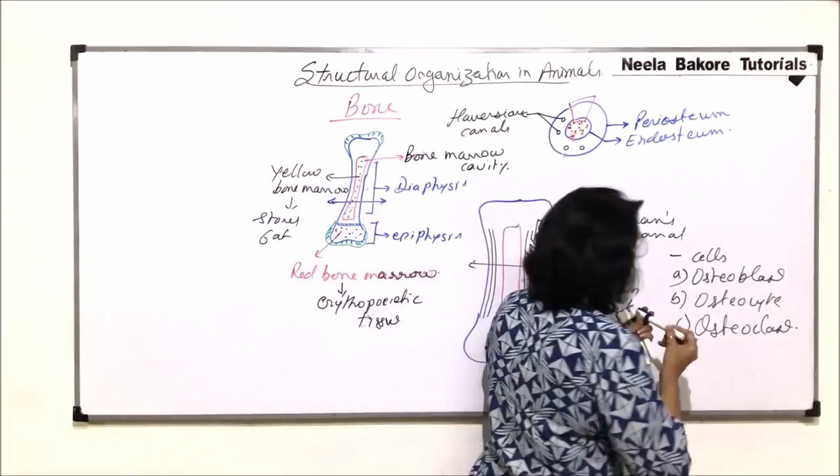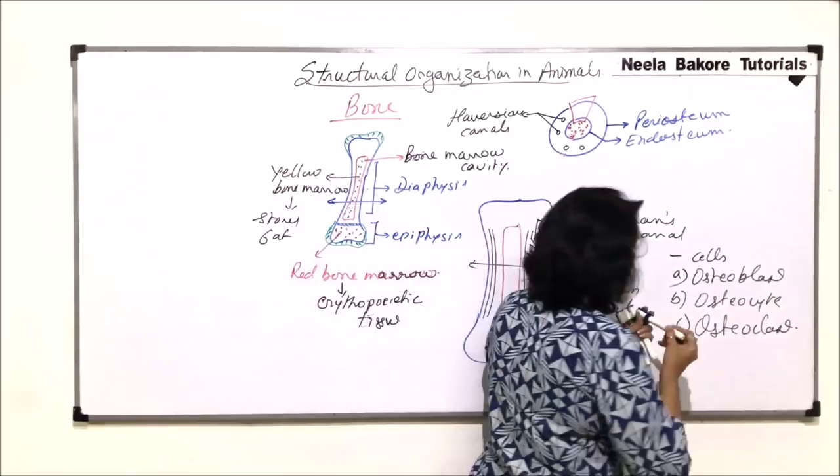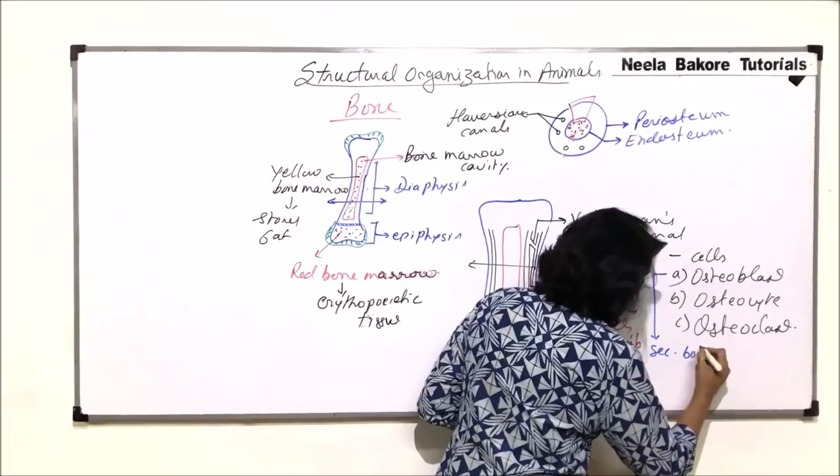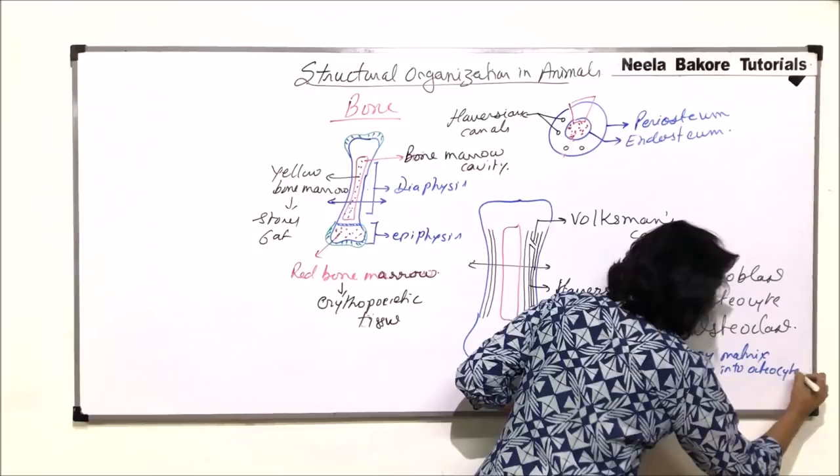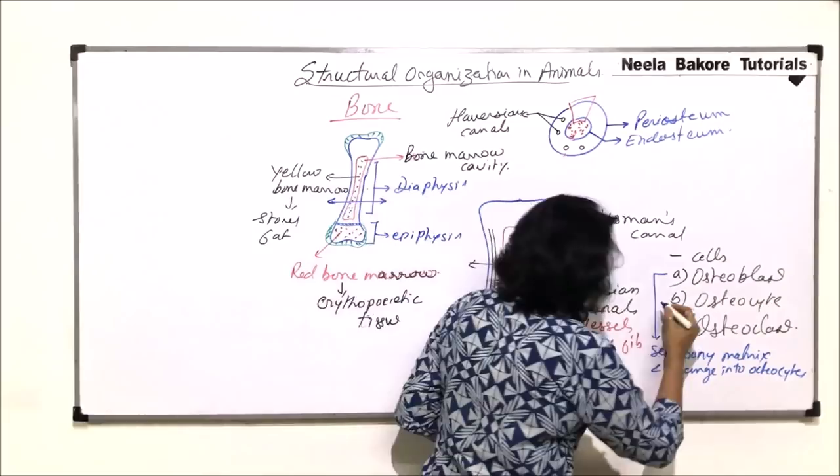Osteocyte function is maintenance of the bony material. What is the function of osteoblasts? They secrete bony matrix and change into osteocytes once they get surrounded by the bony material.